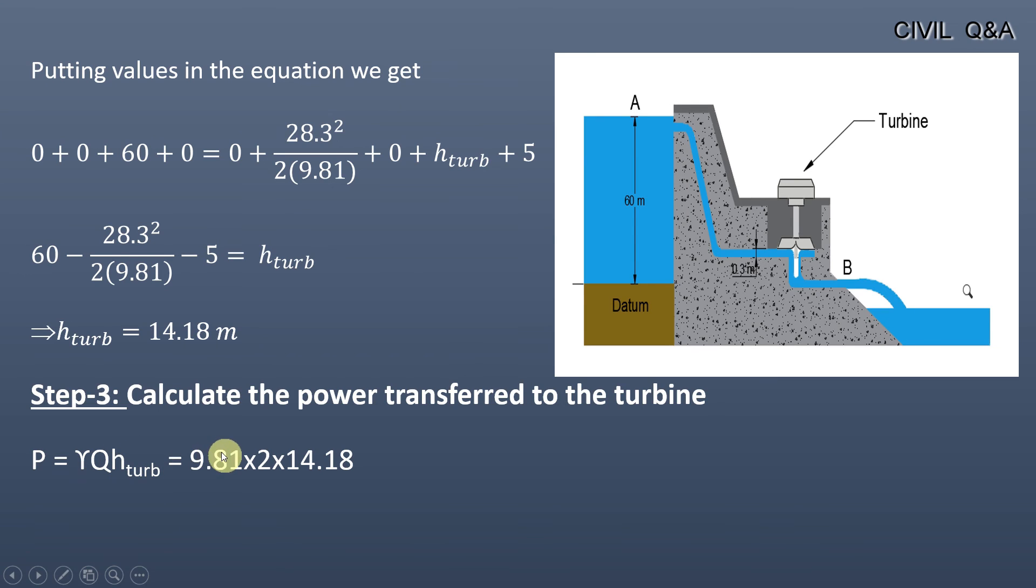Putting values, we get the power transferred to the turbine as 278.212 kilowatts. As we have to report the final answer up to three significant figures, we will write it as 278 kilowatts.